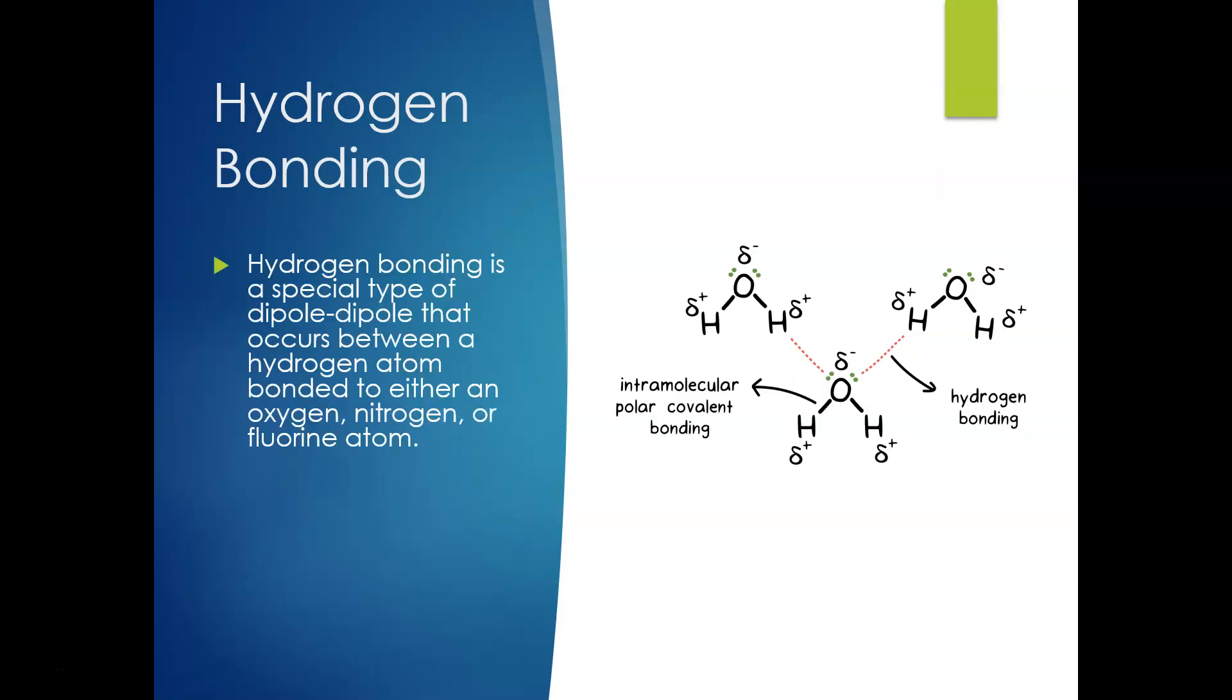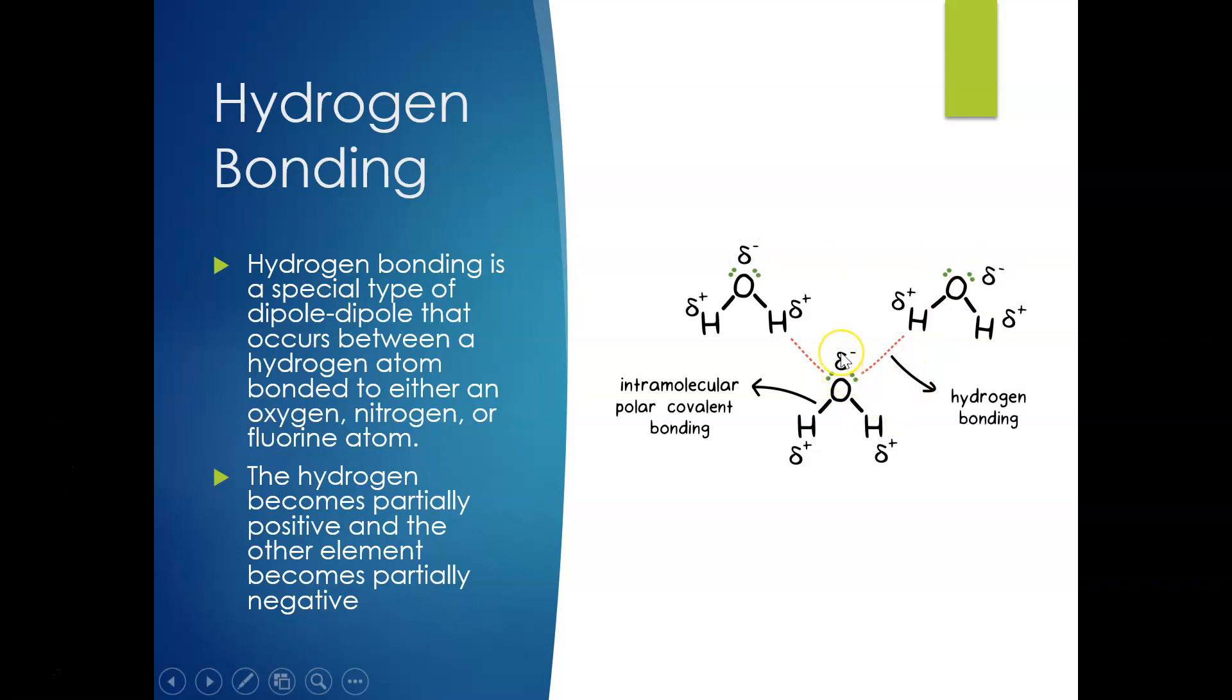Now, hydrogen bonding is actually a very specific type of dipole-dipole, so it's kind of a subtype. And it's one that occurs between a hydrogen atom and only oxygen, nitrogen, or fluorine. So in our previous example, we had chlorine, so hydrogen bonding wasn't happening even though hydrogen was a part of it. It only happens between hydrogen and oxygen, nitrogen, or fluorine. The hydrogen becomes partially positive and the other element becomes partially negative. So it is working just like the dipole-dipole we previously saw, where this oxygen in water, we talked about how polar water is, has a partially negative charge, and the hydrogen from another water that has a partially positive charge is attracted to that oxygen forming a hydrogen bond.